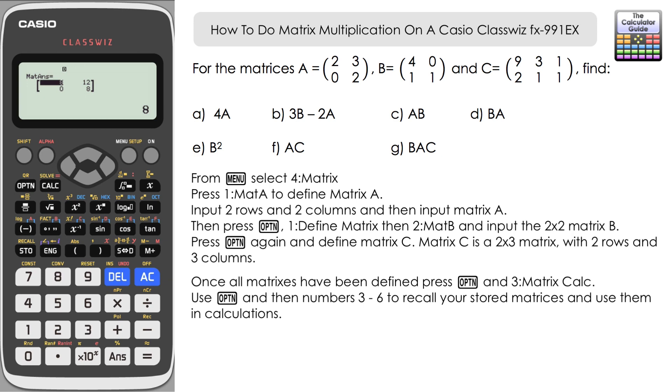Part B, we have 3B minus 2A. Once again, fairly straightforward to input 3, option 4 for matrix B, subtract 2, option, and then 3 for matrix A. And you can see that we have our answer here.